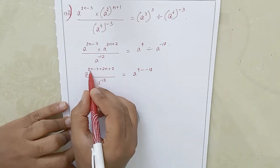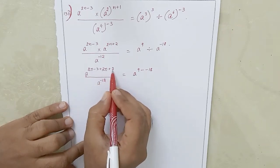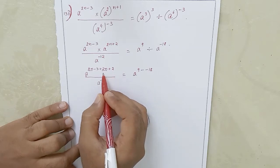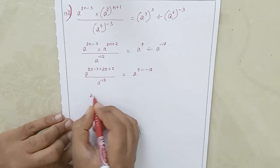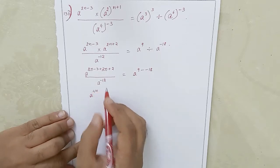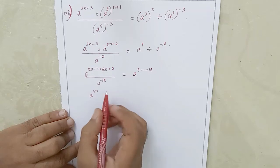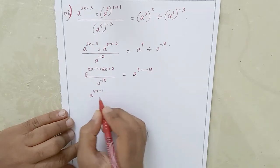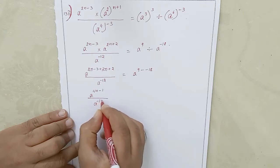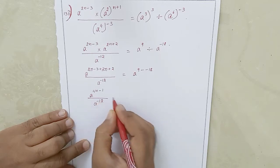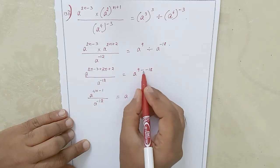Now 2n and 2n I can add — it becomes 4n. Then minus 3 plus 2 becomes minus 1. So this is a power 4n minus 1, divided by a power minus 12, equals a power 27.